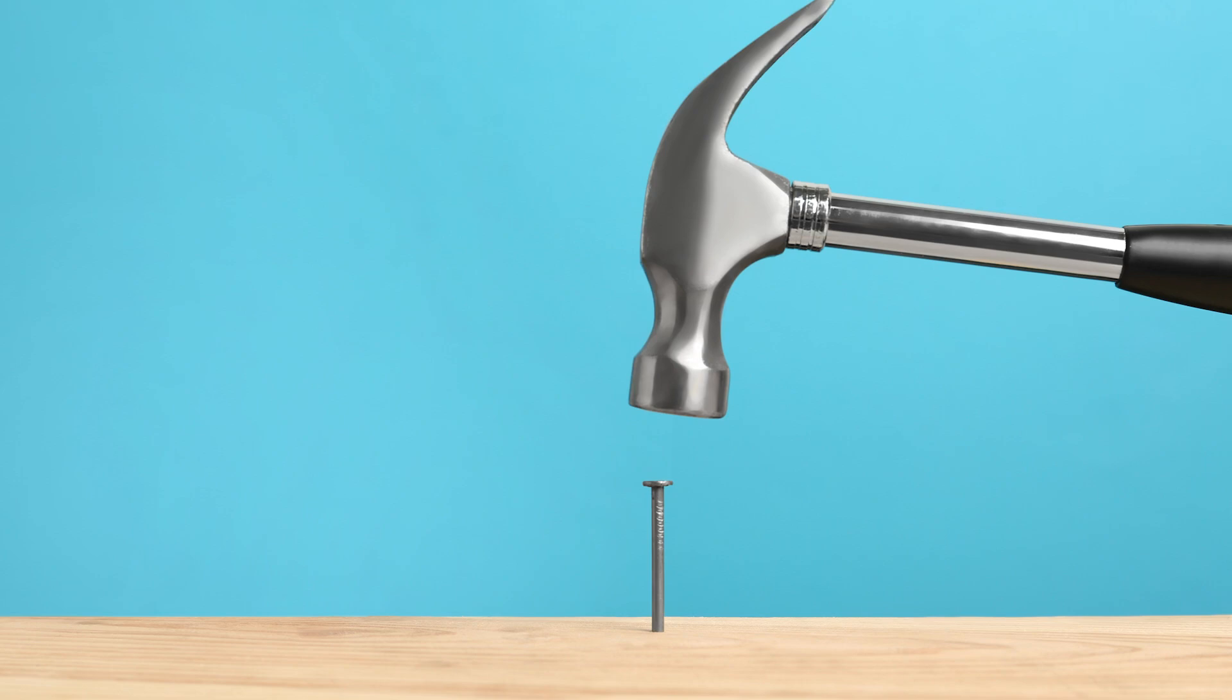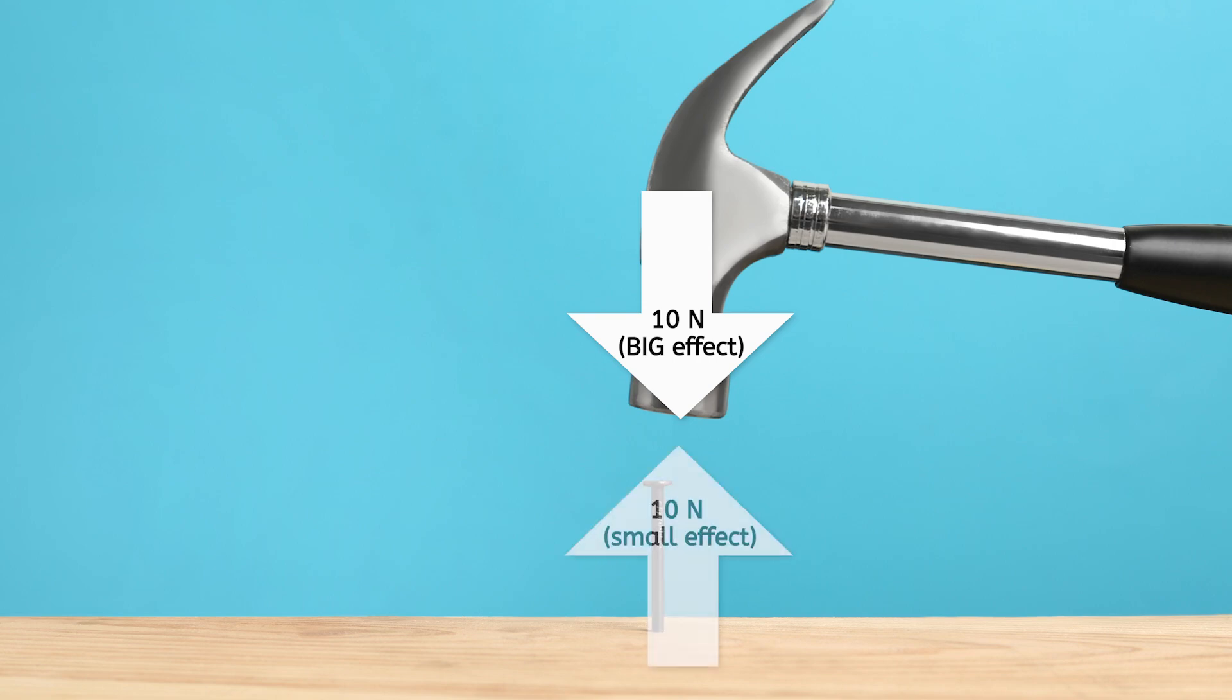It's because of mass. Just because the forces are equal doesn't mean the response will be equal. A large hammer putting a force of 10 newtons on a tiny nail will have a big effect on the nail, driving it deeper into the wood. The 10 newtons of force that gets put back on the hammer will barely be noticeable because of the hammer's mass.